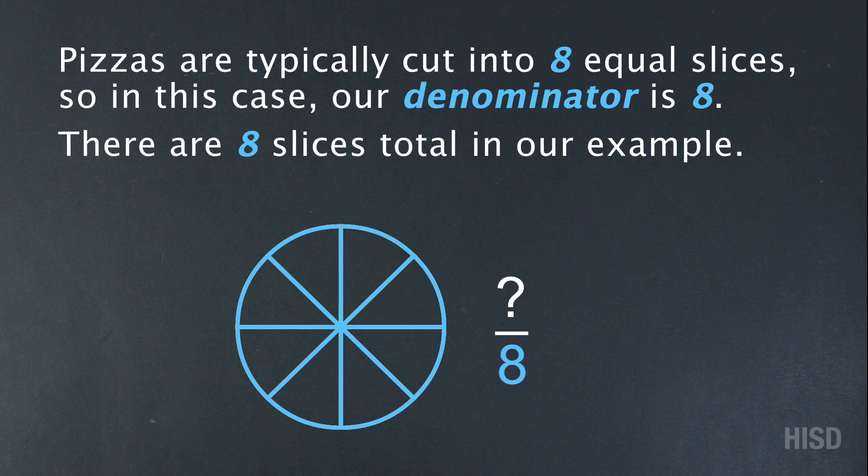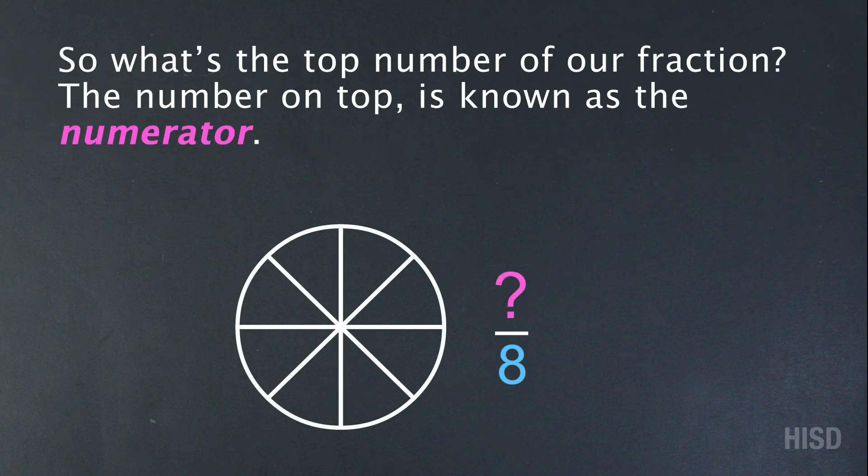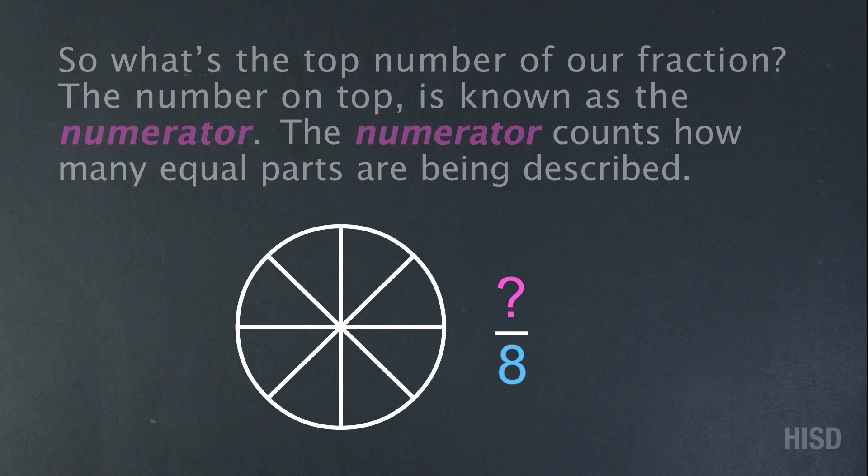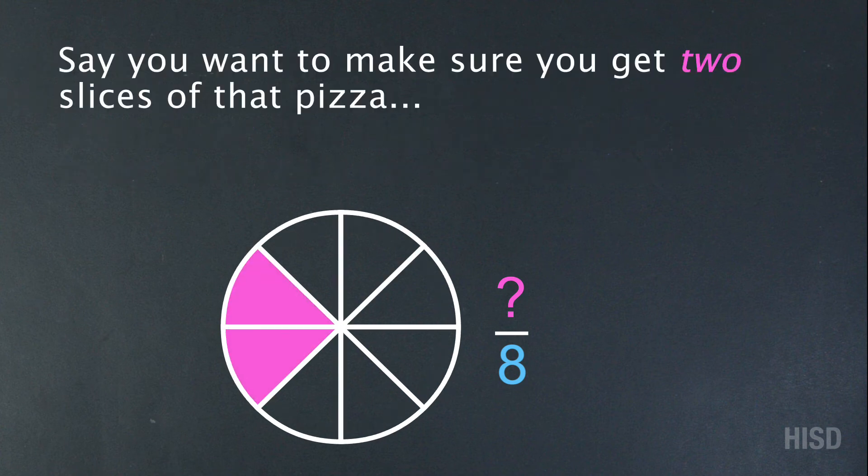So what's the top number of our fraction? The number on top is known as the numerator. The numerator counts how many equal parts are being described. Say you want to make sure you get two slices of that pizza.